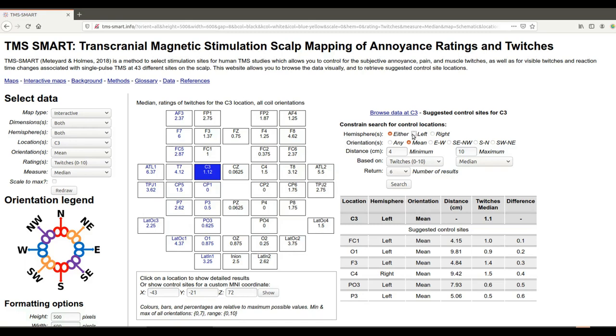So we want one that's in the left hemisphere. We're going to choose this orientation because that seems to be the default in some studies. And we're going to say let's try and make it four to six centimeters away and we're going to base our results on twitches. So we just click search.